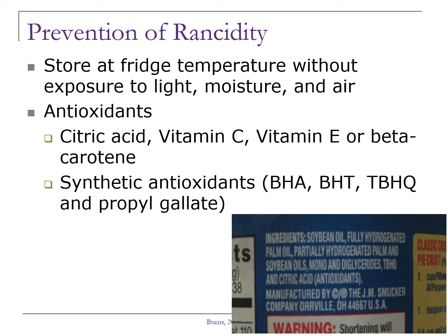So how do we prevent rancidity or the spoilage of fats? Some fats such as butter and margarine are stored in the refrigerator. Lipids need to be stored without light, moisture, and air as those are the most likely culprits of rancidity. Antioxidants may also be used to prevent rancidity as they prevent oxidation which can lead to oxidative rancidity. Citric acid, vitamin C, vitamin E, and beta carotene are all natural antioxidants, and there are also four synthetic antioxidants approved by the FDA as a food additive. If you look here at the label for the Crisco shortening, what are the two antioxidants used?